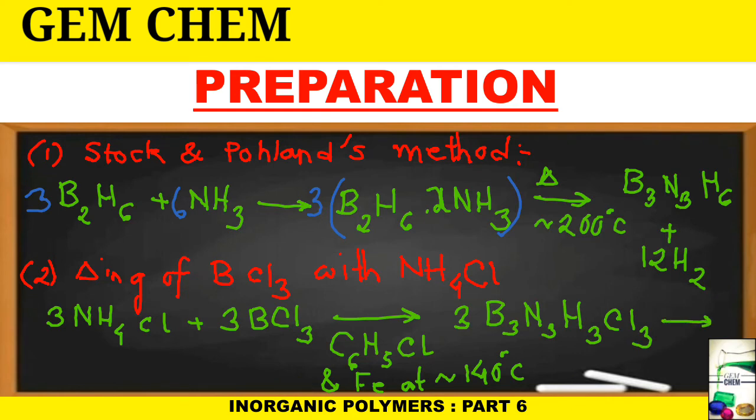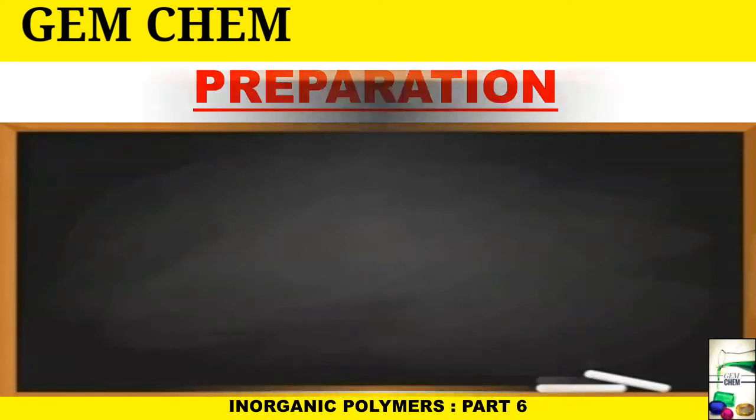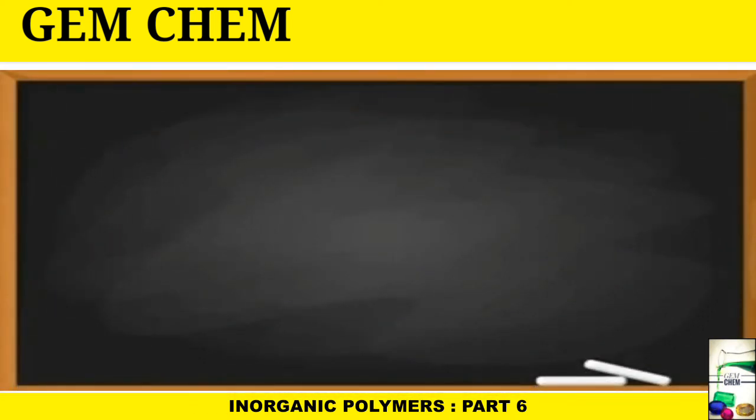This will be reacted with lithium aluminum hydride to give us the reduced product. Ultimately we will get 2B₃N₃H₆ plus 6LiCl plus 3B₂H₆.